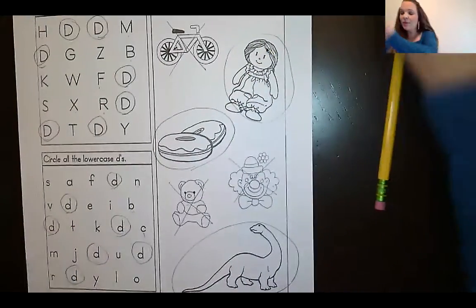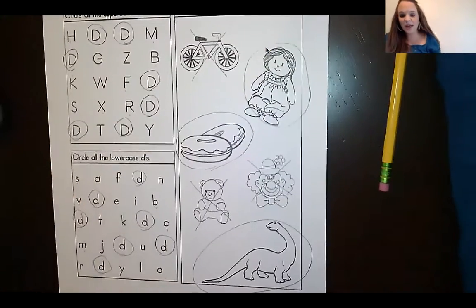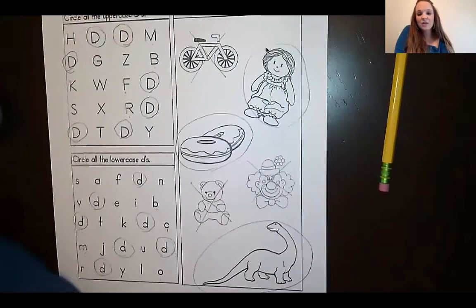All right, guys. Here is your D paper. Pull it up a little bit. Miss Landry, if you need to pause it here, you can. All right, guys. Great job. I will see you at our next activity.